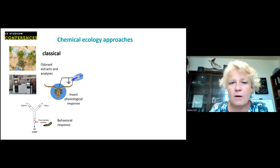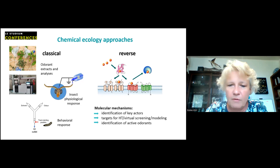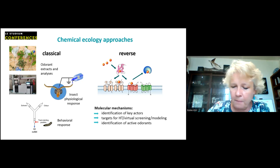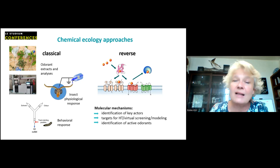The principle of reverse chemical ecology is to start from the mechanism of the olfactory process, especially the proteins involved, and work at the protein level — either in vitro or in vivo. This enables high-throughput methods for molecule screening, virtual screening and modeling, to identify active odorants at the molecular level. After this, you still need behavioral tests, but you have already preselected active molecules — molecules you know are at least detected by the insect.